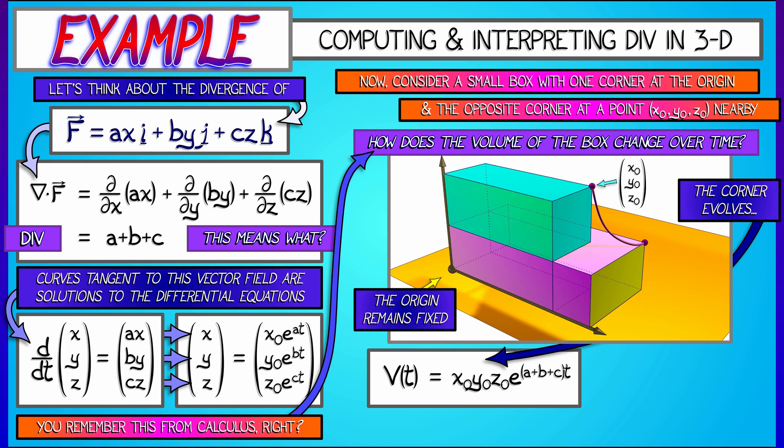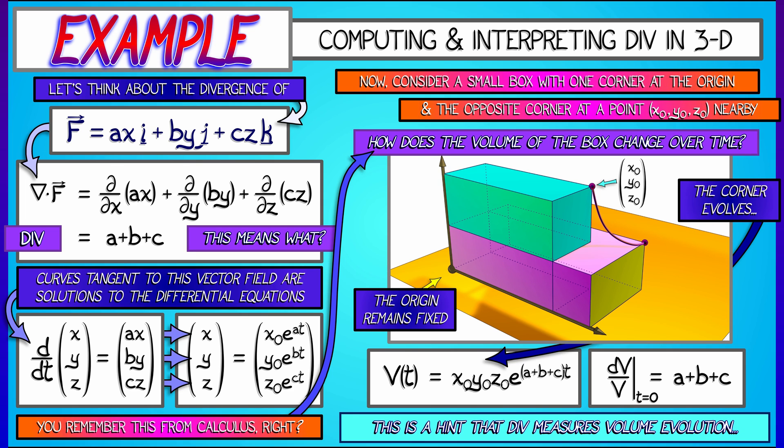...dv over v at t equals 0, what I get is a plus b plus c. That is the divergence of the vector field.